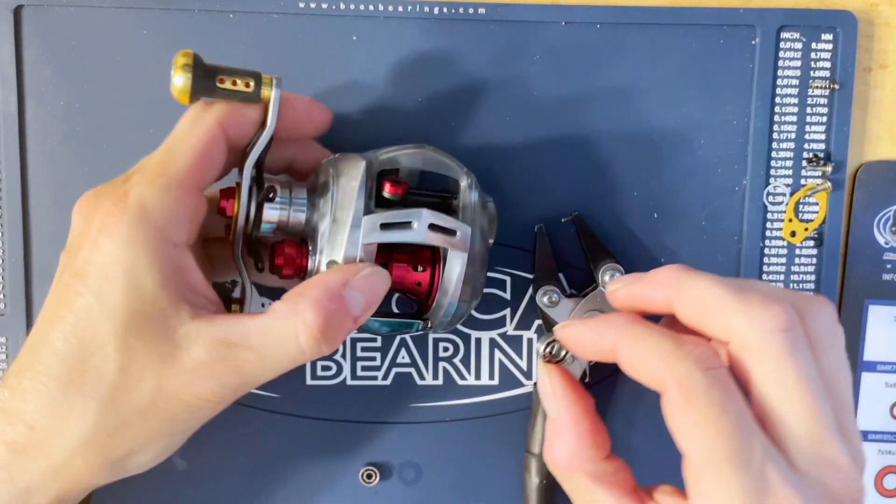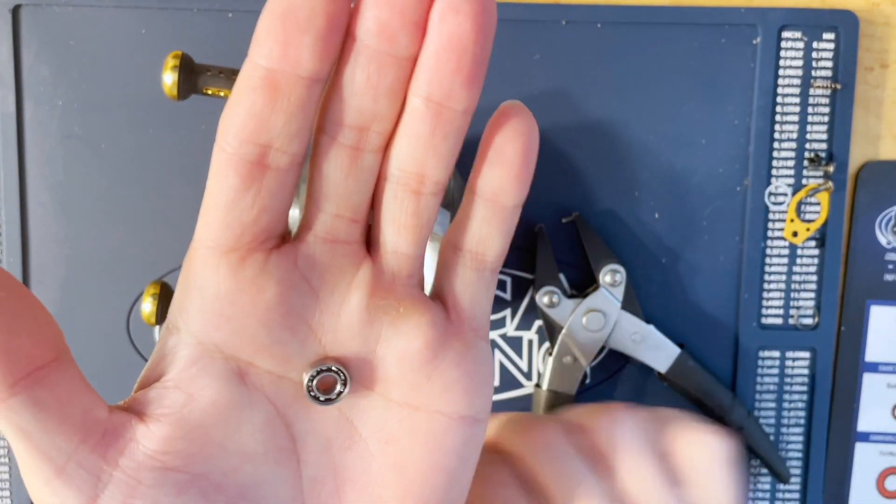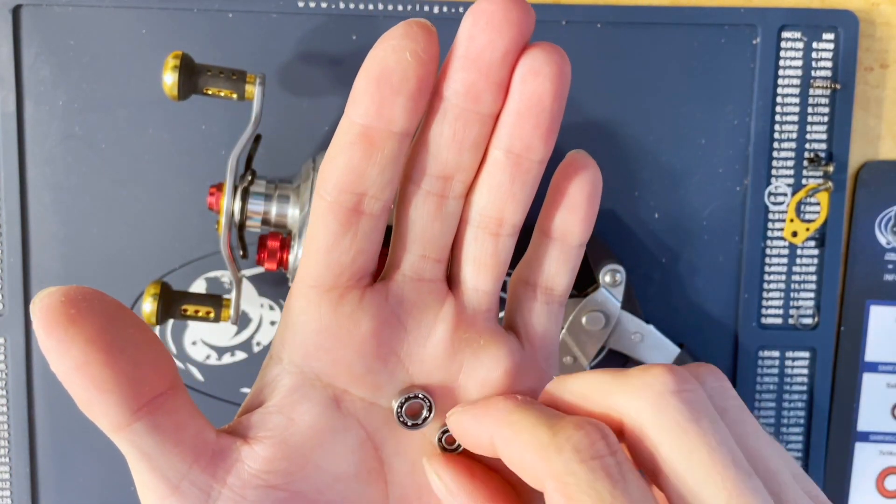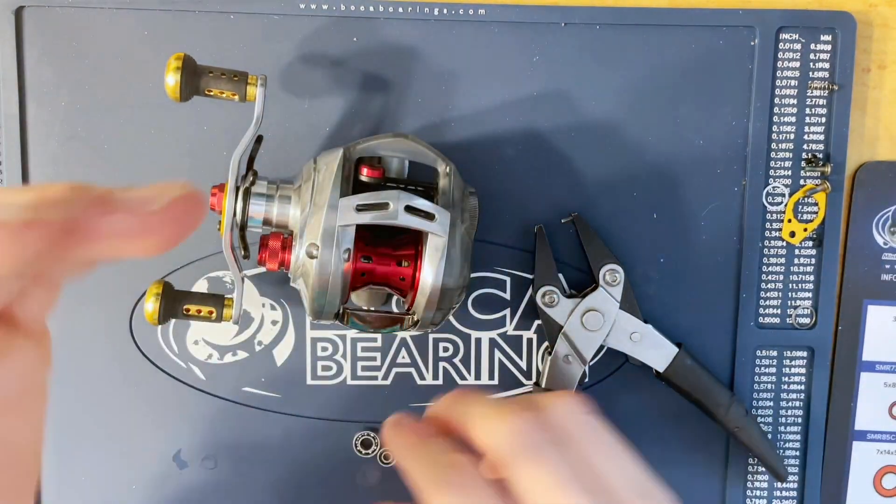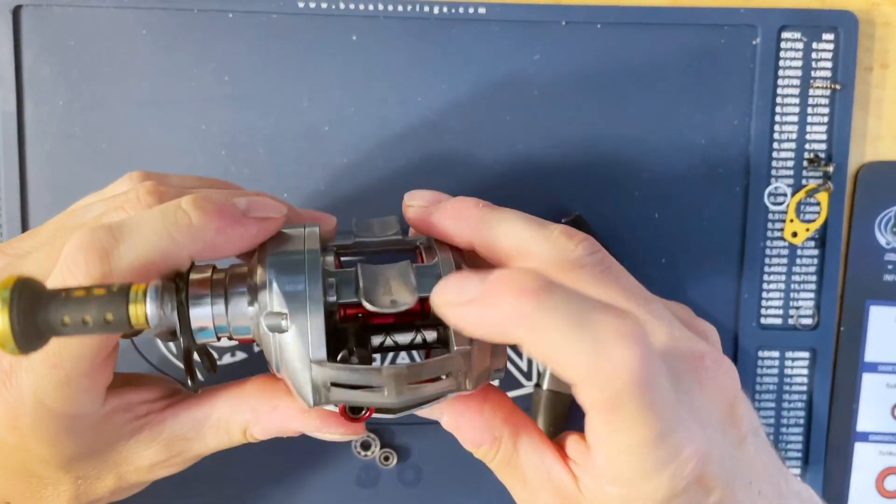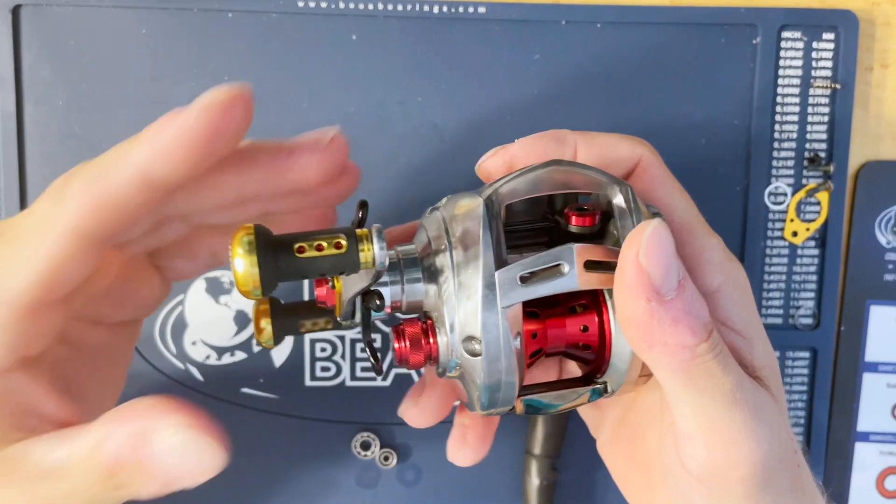I'm going to upgrade the bearings. I've got a 5114 and a 384 right here, so I'm going to swap those out real quick and just add a little grease and oil to the worm gear. Everything should be good.